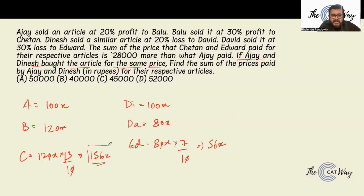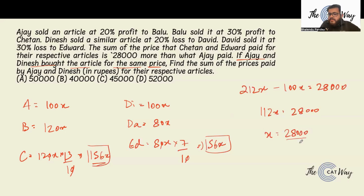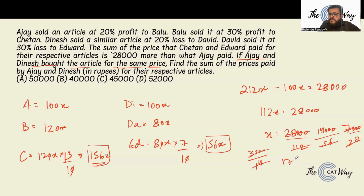The sum of prices Chetan and Edward paid is 156x plus 56x, which is 212x. This is 28,000 more than what Ajay paid (100x), so 112x equals 28,000. Therefore x equals 28,000 divided by 112. Simplifying: 14,000 by 56, then 7,000 by 28, then 3,500 by 14, then 1,750 by 7, giving x equal to 250.